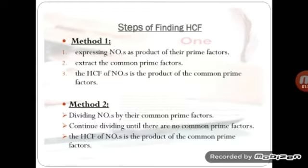In method two, we divide the given numbers by their common prime factors, and we continue dividing until there are no common prime factors. Finally, we multiply these common prime factors to obtain the HCF of the given numbers, just like we do in method one, step three.